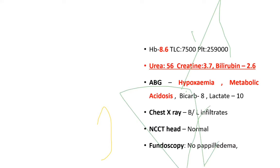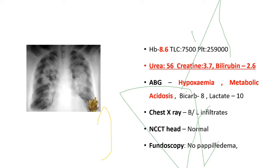Initial investigations revealed hypoxia, raised urea and creatinine, raised bilirubin, hypoxemia, metabolic acidosis, and anemia. The initial chest X-ray clearly showed bilateral infiltrates, pointing towards developing ARDS.